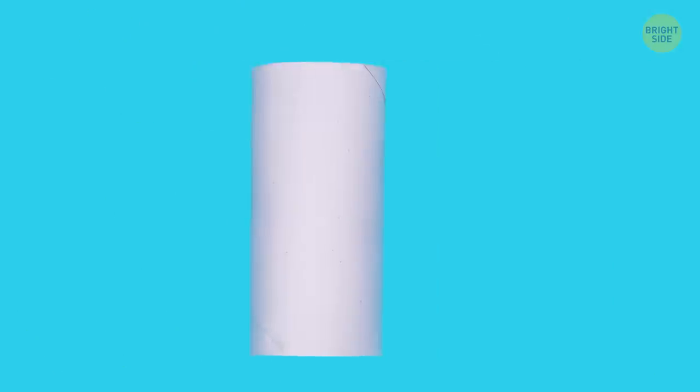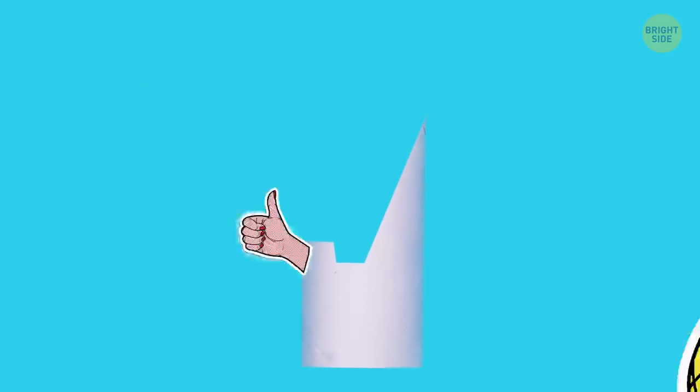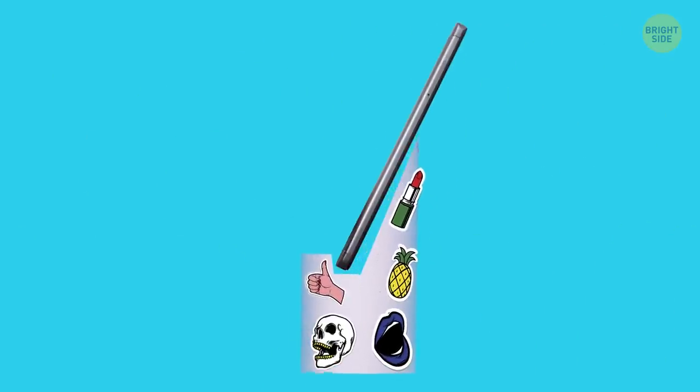Another use for a toilet paper roll is a phone stand. Flatten the roll and draw the outlines of your future holder. Don't forget to make two little pockets to keep your phone in place. Get creative and decorate the stand any way you like.